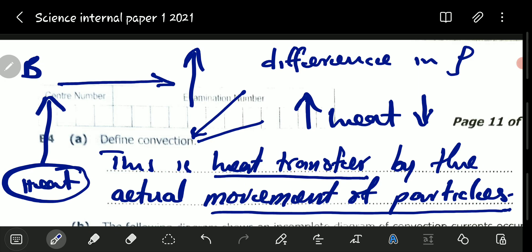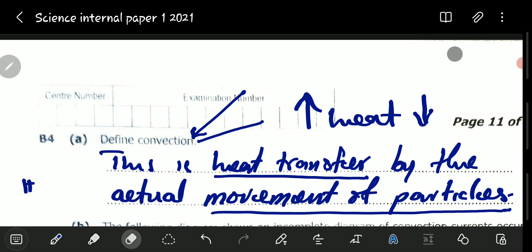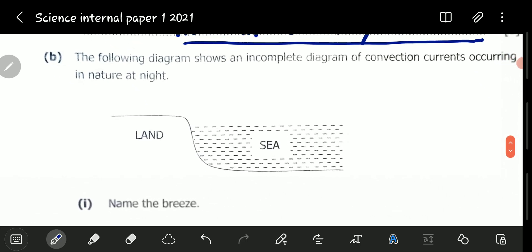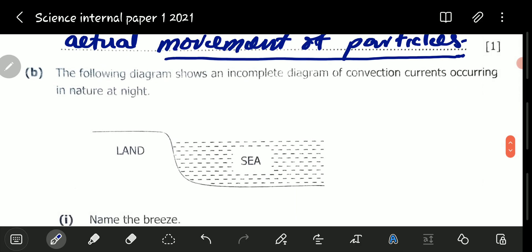I think we've detained that part so much just to emphasize the point that heat will move in that particular way. Let's proceed to the next. Part B says, the following diagram shows an incomplete diagram of convection currents occurring in nature at night.